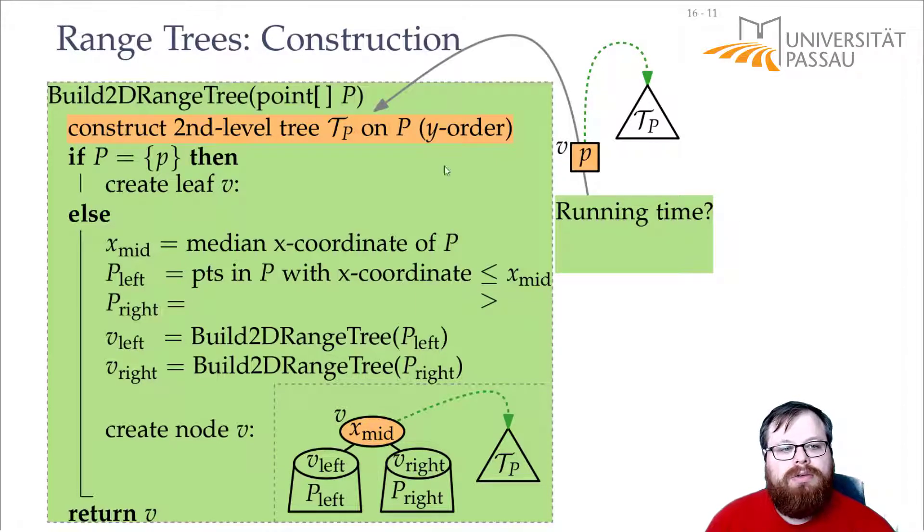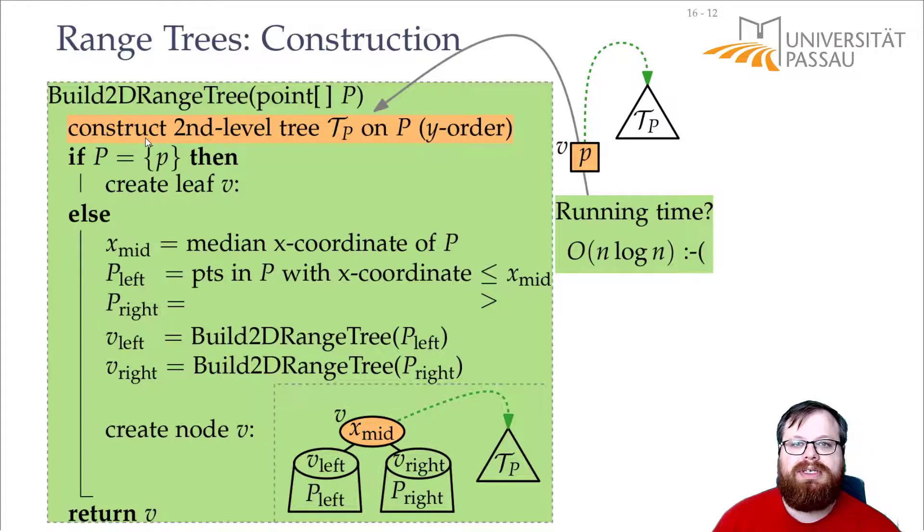What is the running time of this? Well, first we have to do the second level tree on p. And this is a one-dimensional range tree. And the one-dimensional range tree is just a binary search tree. So to build this we take order of n log n time. That means that in every step of the recursion we need order of n log n time. So our recurrence before for the kd trees it was order of n plus 2 t n over 2. Now it's order of n log n plus 2 t n over 2. So this takes much more time than before. Because now we don't get an n log n algorithm but an n log squared n.